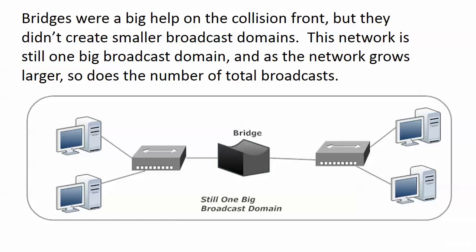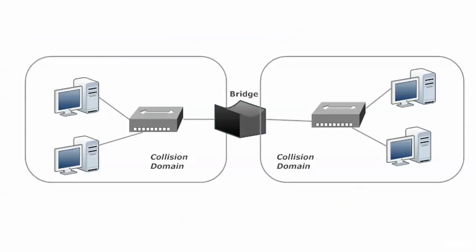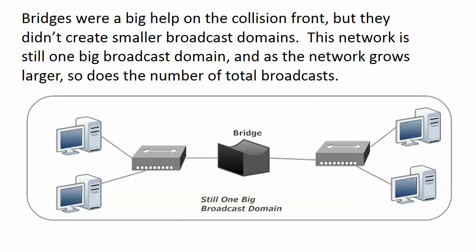The only problem with bridges — a big problem — is that they did not help us create smaller, multiple broadcast domains. Because this network is still one big broadcast domain. As the network grows larger, so does the total number of broadcasts. You can see what I was referring to in the previous video. What we've got now are two hubs, and we could easily connect more devices — 16 on each one, 32, however many ports we have on that hub. The more hosts we have, the more broadcasts we have, and the more broadcast propagation we end up with. So the big plus with our bridge was creating smaller collision domains and fewer collisions. The big minus was that we still have one big broadcast domain, so our broadcast propagation is really the same.